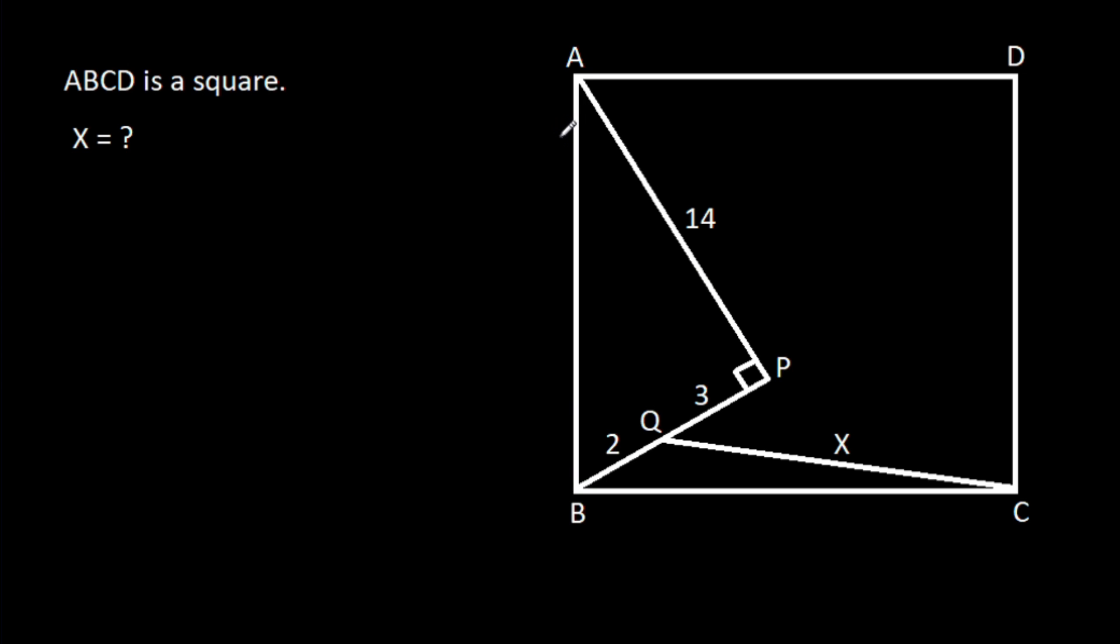In this video, we have been given that ABCD is a square and angle APB is 90 degrees and AP is 14, PQ is 3, BQ is 2, and CQ is X. Then, we have to find X.